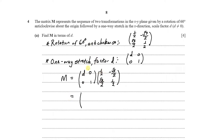Multiplying row by column: d×½ + 0×(√3/2) gives ½d; d×(−√3/2) + 0×½ gives −√3d/2; 0×½ + 1×(√3/2) gives √3/2; and 0×(−√3/2) + 1×½ gives ½. So matrix M is: top row (½d, −√3d/2), bottom row (√3/2, ½). That completes part A.